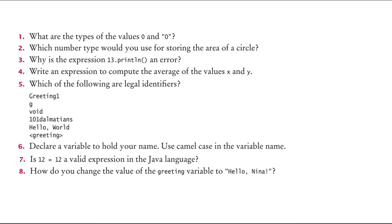The first one: what are the types of the values 0 and "0"? So the zero, this thing, is an integer. Why is it not a double? Because it's not 0.0. If it were 0.0, it would be a double, but no, it's an integer. And this zero with the quotation marks can be a string.